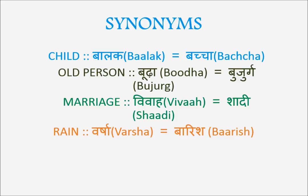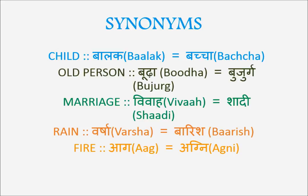Rain is 'varsha' or 'baarish.' Example: 'Bahut zor ki varsha ho rahi hai bahar' — it's raining heavily outside. 'Is baarish mein main tumhe nahi jaane dungi' — I will not allow you to go out in this rain. 'Baarish ka mausam' means rainy season. 'Varsha ritu' also means monsoon season. Then fire: 'aag' — 'aag lagi hai' means there is a fire.